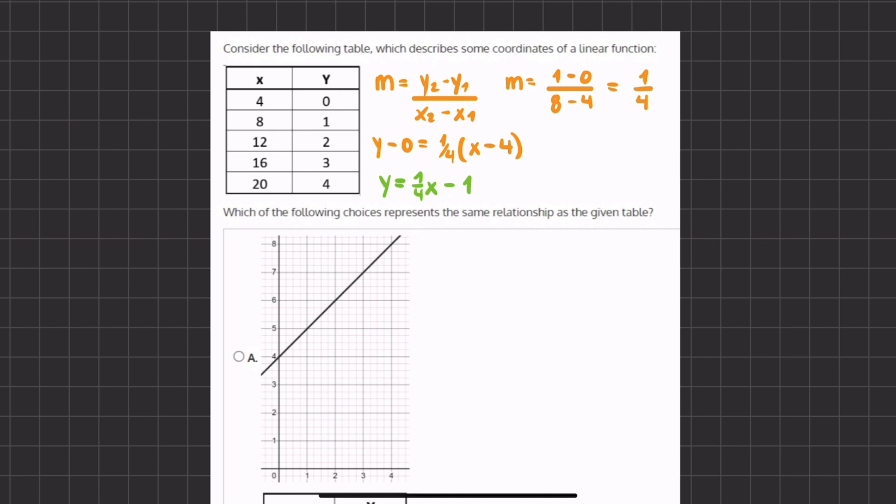As you can see, I've already solved for the slope of this linear function and found the point slope form function in green, and you are more than welcome to pause the video to take a closer look to see how I solved that.